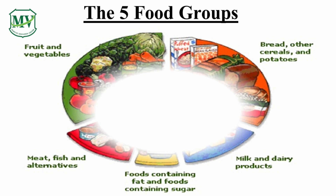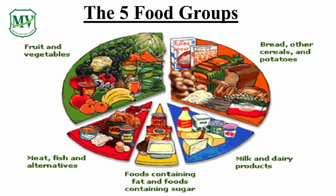These are the five food groups: Fruits and vegetables; Meat, fish, and alternatives; Foods containing fat and foods containing sugar; Milk and dairy products; Bread, other cereals and potatoes.